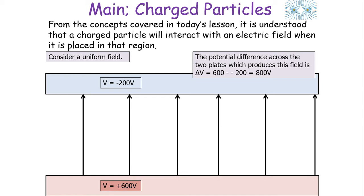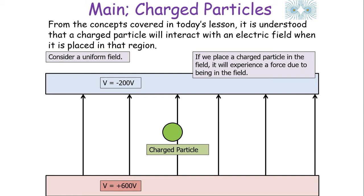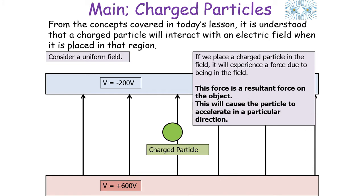The potential difference across the two plates that produces this field is 800 volts, because the difference between minus 200 and 600 from either plate is 800. If we place a charged particle in the field, it will experience a force due to being in that particular field. That's due to the definition of the electrical field — it's a region of space where a charged object will experience a non-contact force.